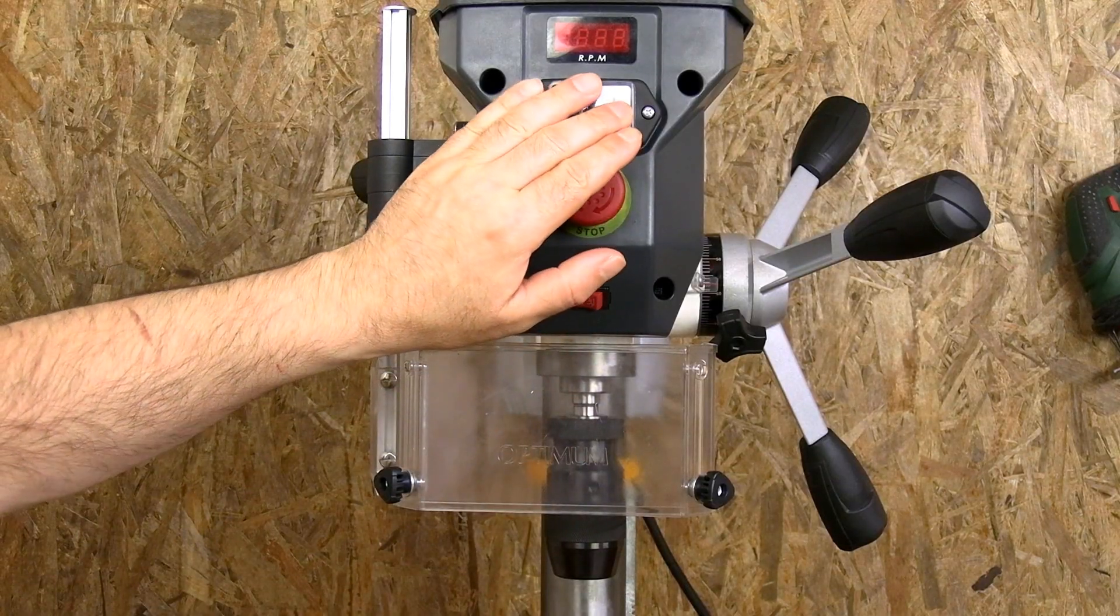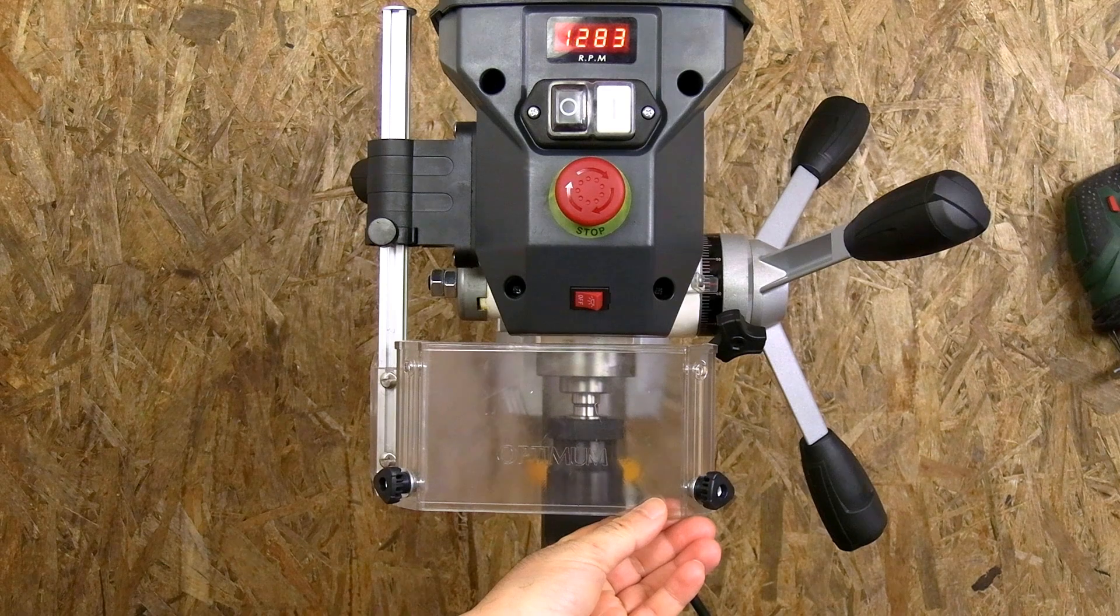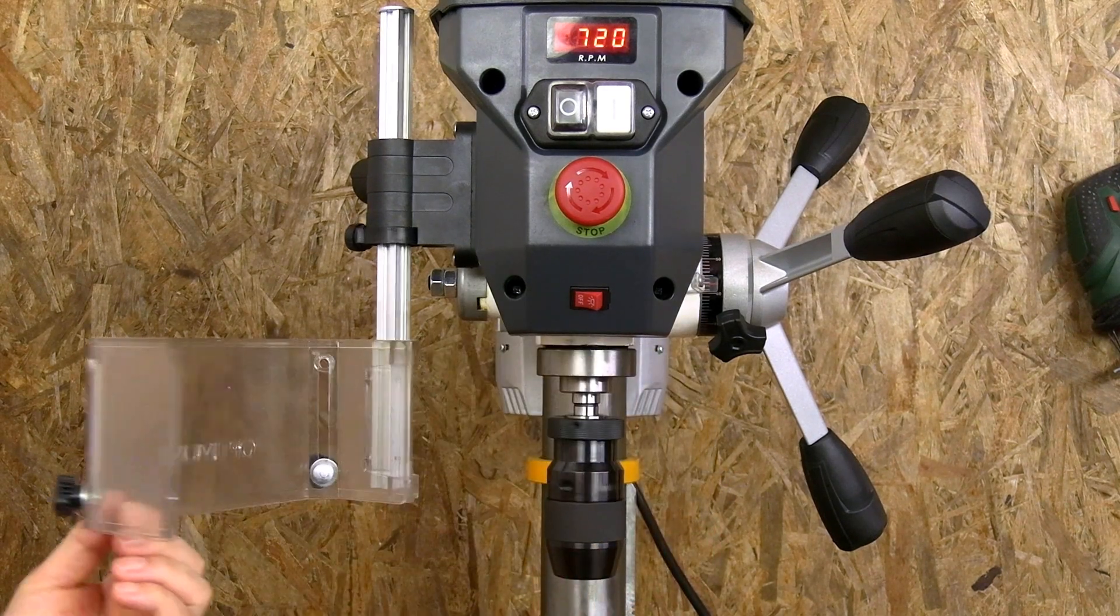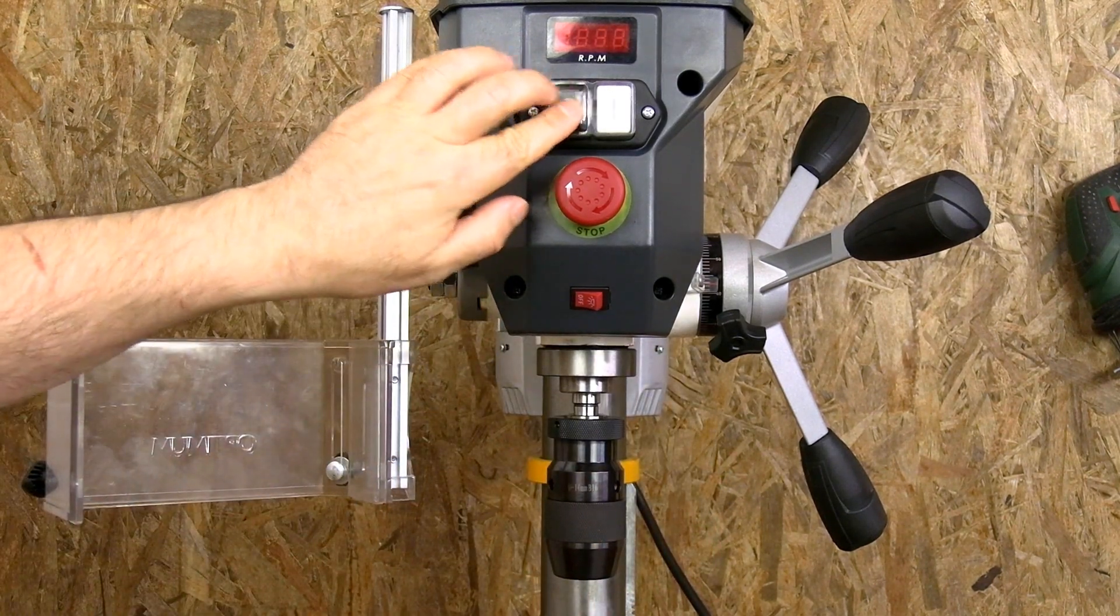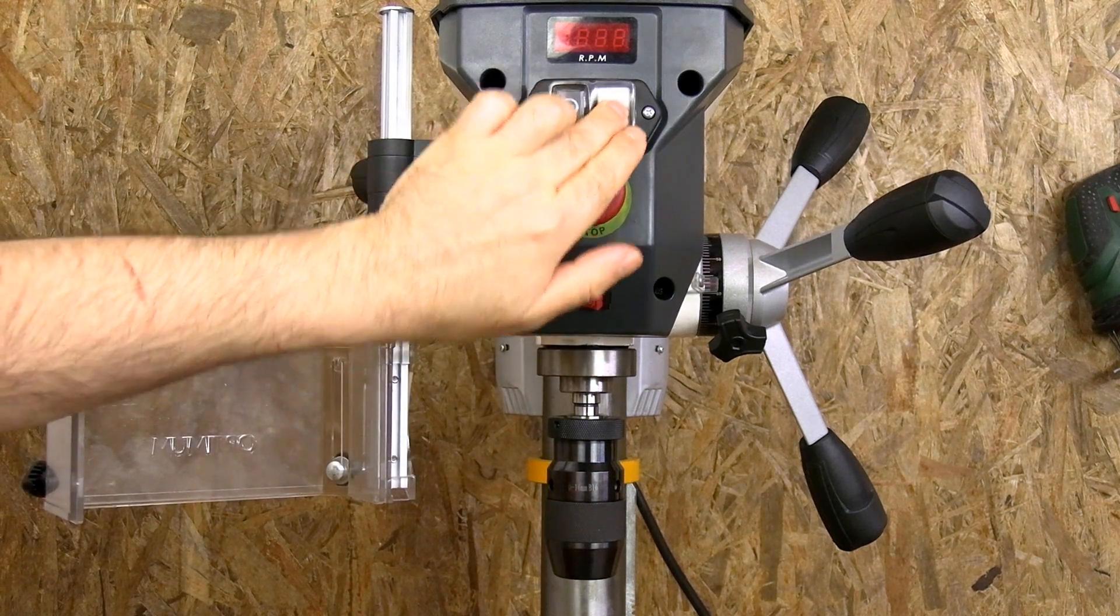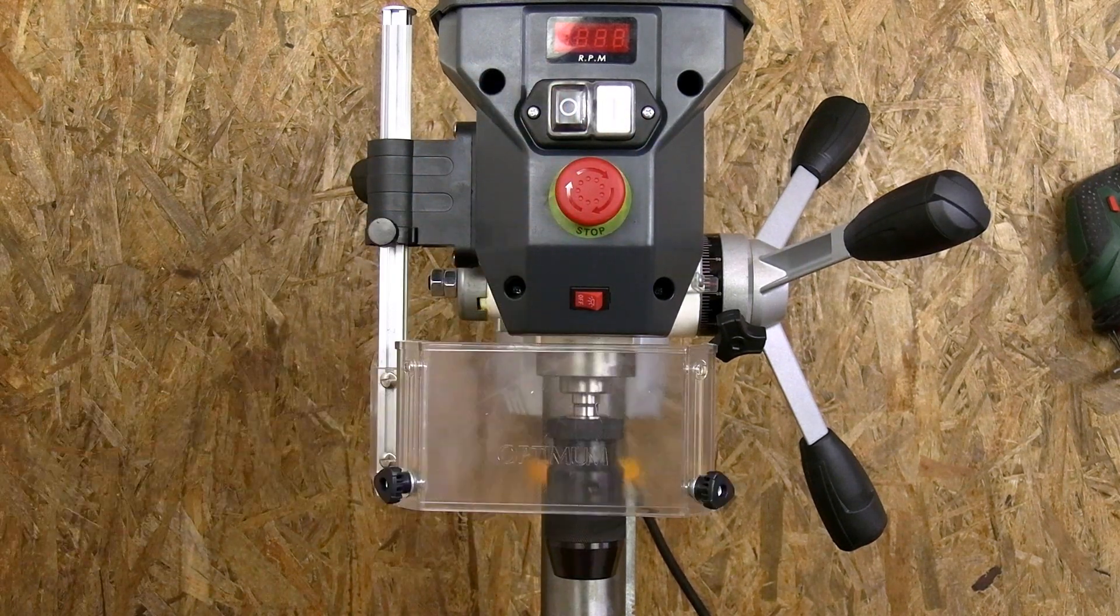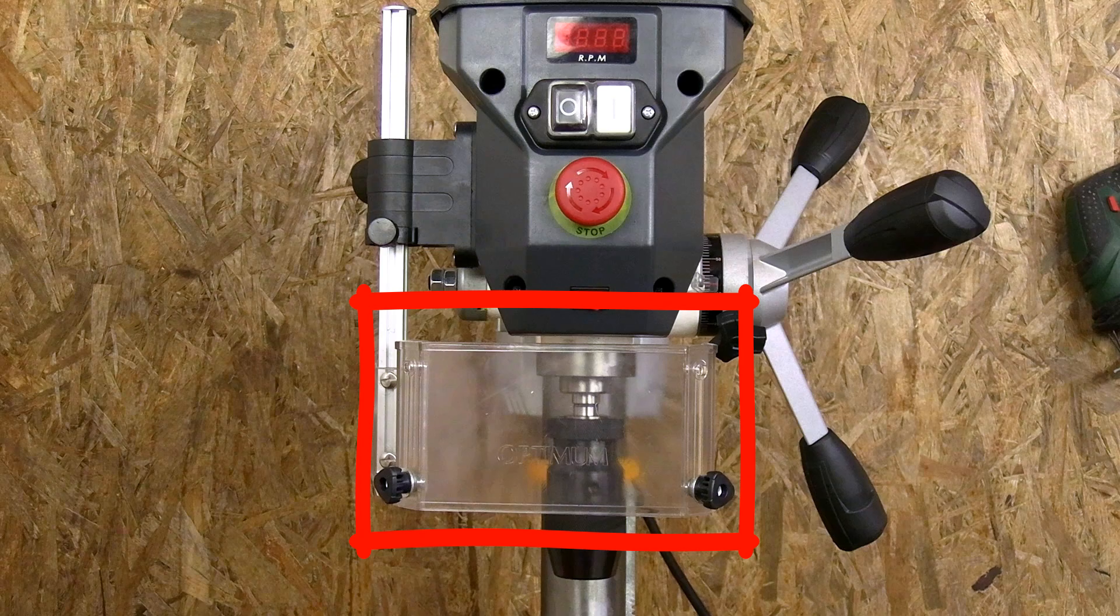I thought that the safety screen would probably be bothersome when recording my woodworking videos. I just discovered that I can swing it to the side, but that turns the drill press off. Well, surely it won't be a problem when it is in the top position.